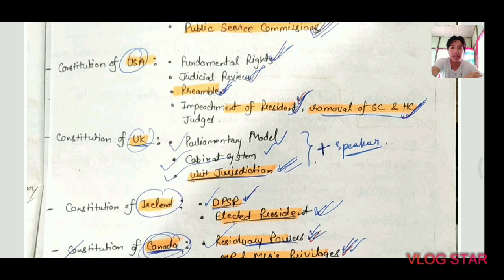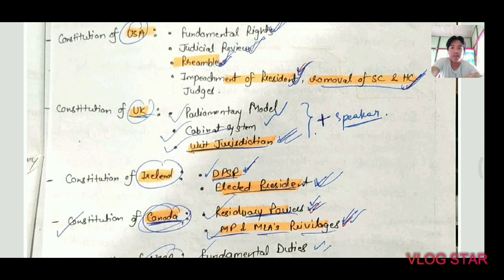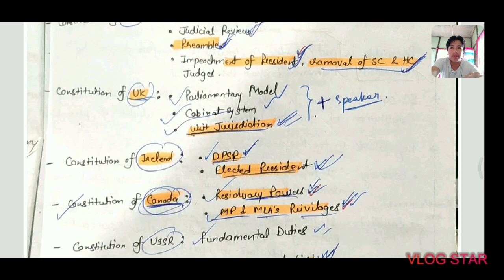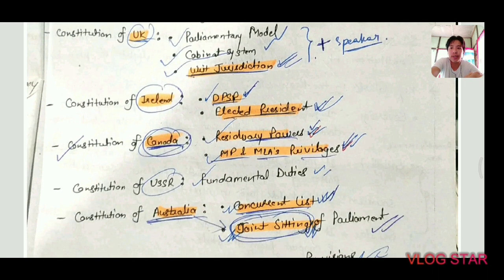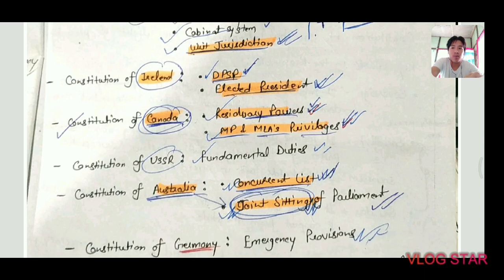From the Constitution of the USA came: Fundamental Rights from the Bill of Rights, judicial review, the Preamble, impeachment of the President, and removal of Supreme Court and High Court judges. From the UK came the parliamentary model and cabinet system, writs jurisdiction, and the Speaker's role. From the Constitution of Ireland came the Directive Principles of State Policy and the system of elected President.